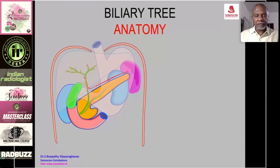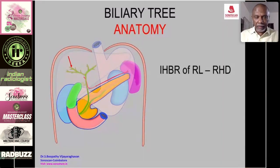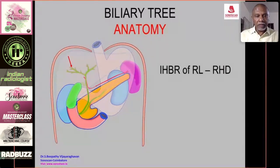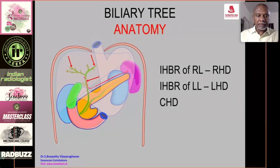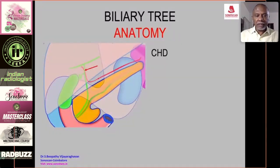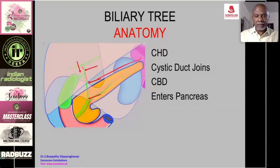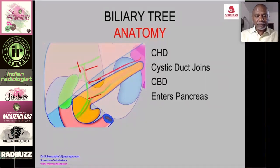First is knowledge of the anatomy. The intrahepatic biliary radicals of the right lobe join to form the right hepatic duct, and those in the left lobe join to form the left hepatic duct. Both join at the porta hepatis, anterior to the bifurcation of the portal vein, to form the common hepatic duct, which is joined by the cystic duct from the gallbladder to form the common bile duct. We cannot identify by ultrasound the point where the cystic duct joins, so we use the term 'common duct' to denote both.